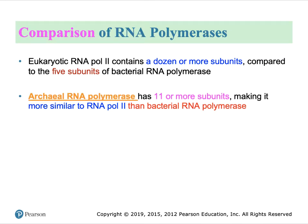Molecular comparisons between the three domains of life give insight into how things evolved. Today, eukaryotic RNA polymerase 2 contains about a dozen or so polypeptide subunits making its core, which is very similar to the archaeal RNA polymerase, which has 11 or more subunits. There seems to be some overlap in functionality. Compare this to bacterial RNA polymerase, which only has five subunits as we saw in a previous part of chapter 8.